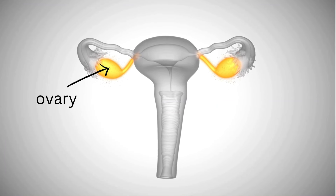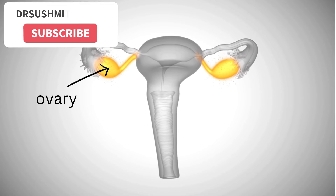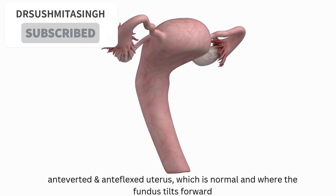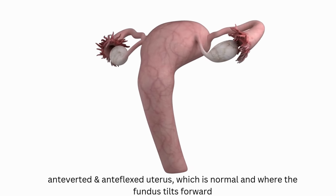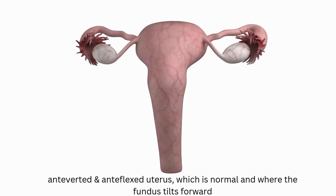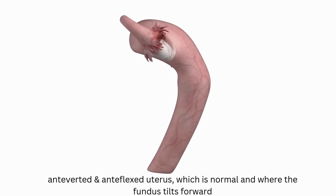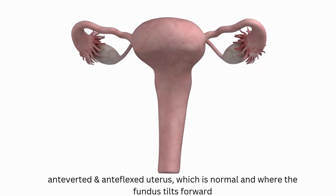As you can see, a female has a pair of ovaries which plays an important role in releasing the egg. In general, the uterus is anteverted and anteflexed, which results in the fundus tilting in a forward direction that helps in the fertilization process.